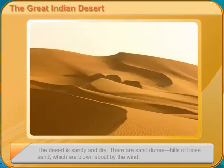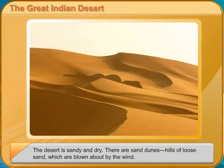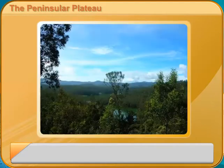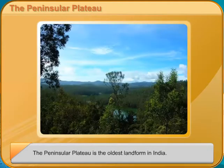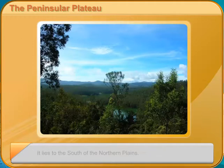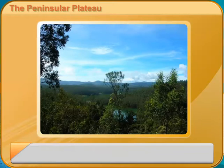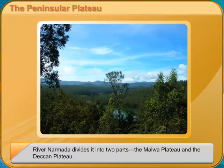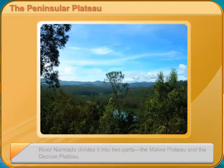The Peninsular Plateau is the oldest landform in India. It lies to the south of the Northern Plains. River Narmada divides it into two parts: the Malwa Plateau and the Deccan Plateau. The Malwa Plateau has the Aravallis to the northwest and the Vindhyas to the south. The eastern and western edges of the Deccan Plateau form the hilly regions — the Eastern and Western Ghats.